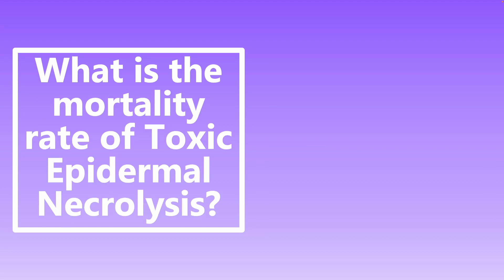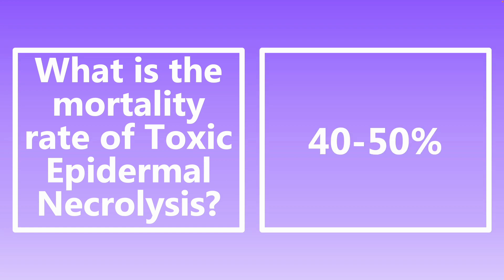What is the mortality rate of toxic epidermal necrolysis? This tends to be more severe, with total body surface area affected anywhere from 30 to 100 percent. As a result, it has a much higher mortality rate — around 40 to 50 percent. Stevens-Johnson syndrome and toxic epidermal necrolysis exist on a spectrum, which is why the mortality rates and affected areas vary greatly.